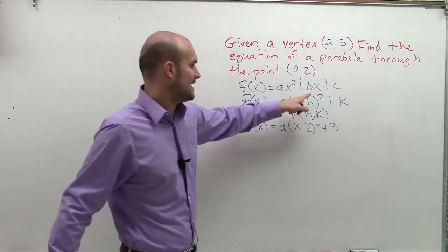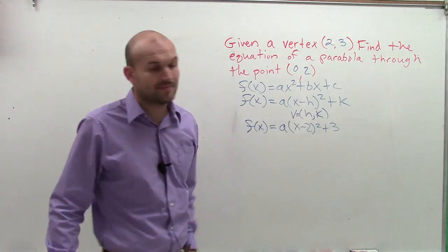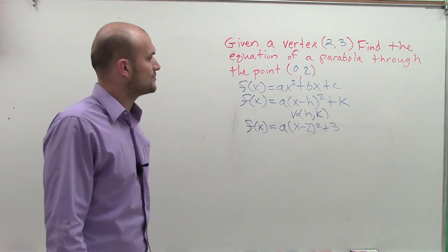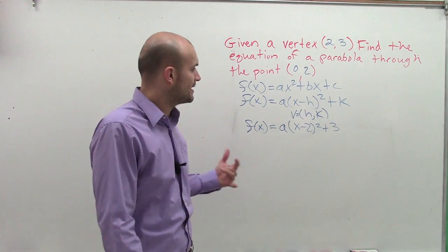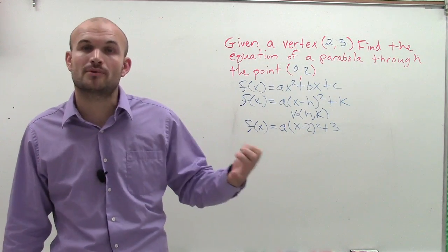Remember your vertex and the vertex in the formula are opposite, right? So you're going to be opposite signs. So I have f(x) = a(x - 2)² + 3. And then it says find the equation of the parabola through the point. So I got to make sure I take my parabola. It has to go through a point.